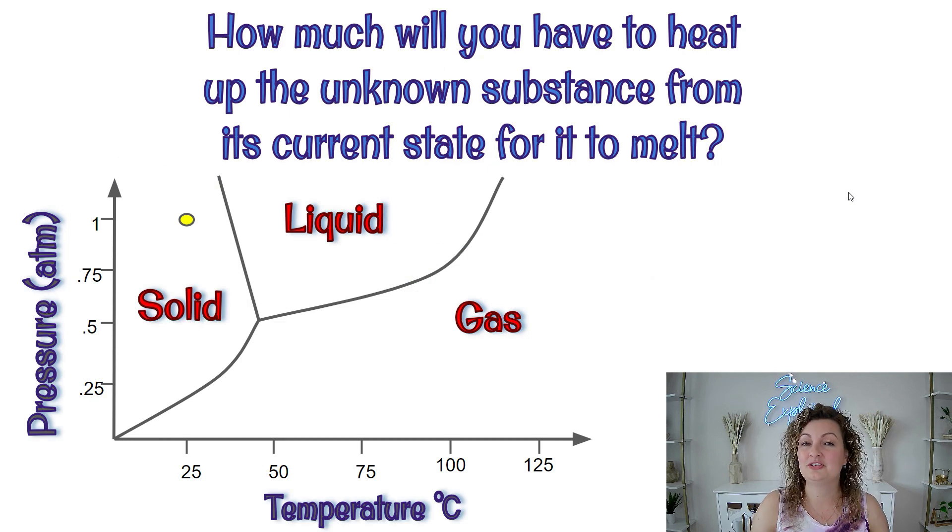So what do you do with these graphs? You answer questions. So let's go ahead and try a couple and make sure we understand what the graph is doing. How much will you have to heat up the unknown substance from its current state for it to melt? So here's the current state right here. We can see we are in a solid. Even if you didn't have these labeled solid liquid gas, hopefully you know by now that that would be a solid.